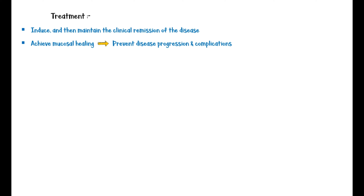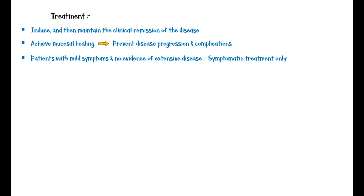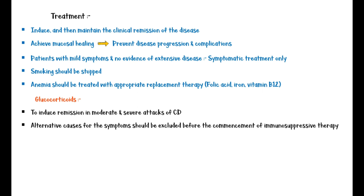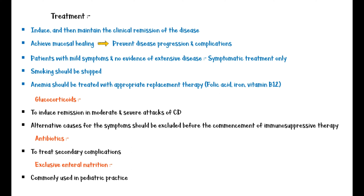The aims of management of Crohn's disease are to induce and then maintain clinical remission, and to achieve mucosal healing in order to prevent disease progression and complications. Patients with mild symptoms and no evidence of extensive disease should receive symptomatic treatment only. Smoking should be stopped and anemia treated with appropriate replacement therapy such as folic acid, iron, and vitamin B12. Glucocorticoids are commonly used to induce remission in moderate to severe attacks. Alternative causes for symptoms should be excluded before commencing immunosuppressive therapy. Antibiotics are used to treat secondary complications such as abscesses. Exclusive enteral nutrition is another modality commonly used in pediatric practice but not widely indicated for adults.